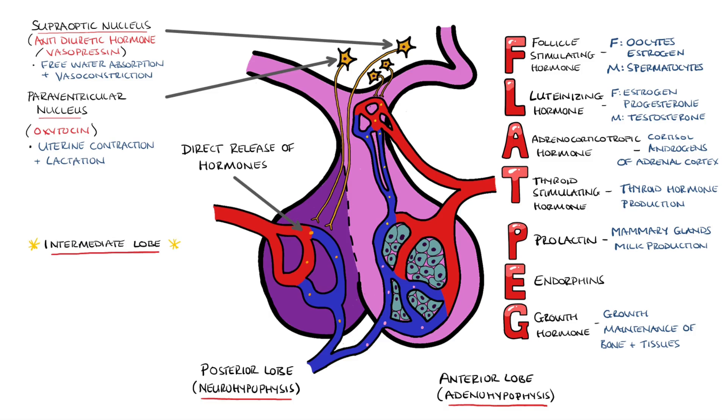Other species have an intermediate lobe, but in humans this is limited to a small portion of the anterior lobe. It produces melanocyte stimulating hormone.